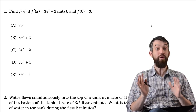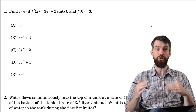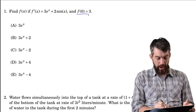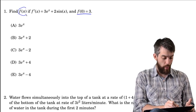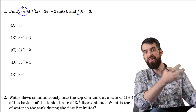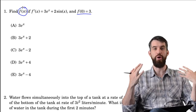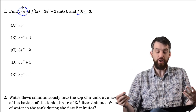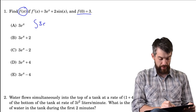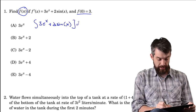First problem. We've been given a derivative f prime which is 3e to the x plus 2 sine of x. We also have that f of 0 is 3, and we need to figure out what f of π is. I have the derivative and I want to find a specific antiderivative. So let's take the integral of f prime — that's the integral of 3e to the x plus 2 sine of x dx.